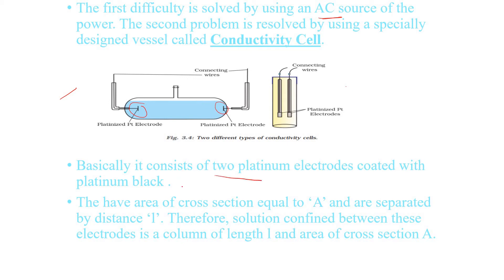The two platinum electrodes are coated with platinum black and connected. The distance between the two electrodes is L, and the solution confined between them has a column length of L and area of cross-section A. This electrolyte is placed between the electrodes, and both the distance and the area of cross-section are considered.